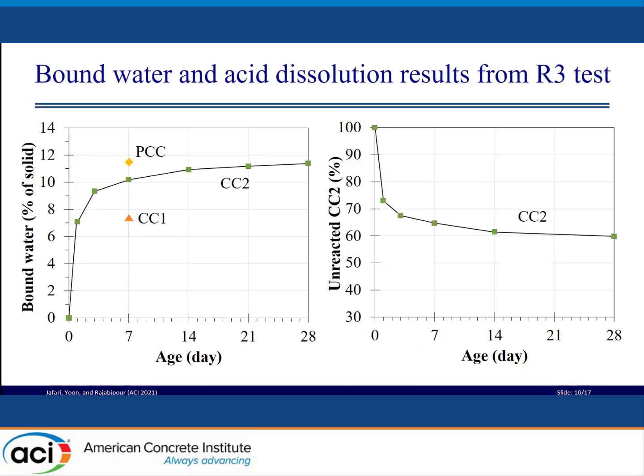The bound water results at 7 days for all three calcined clays are shown in the left figure. It confirms that PCC is the most reactive pozzolan, followed by CC2 and CC1. We can also see that the reactivity of CC1 increased significantly after purification. The bound water at different ages was tested on clay number 2. It is clear that by increasing the curing time, the chemically bound water increased, while the majority of the reaction occurred in the first few days. The acid dissolution was performed on CC2, shown in the right figure, with percent unreacted pozzolan on the y-axis and testing age on the x-axis. It shows that the reactivity of CC2 increased with time; however, the majority of the reaction occurred in the first few days — after one day the reactivity of CC2 is 27%, while after 28 days this value is 40%.